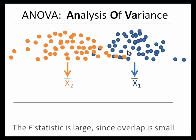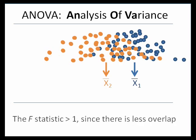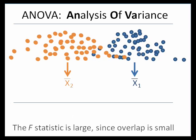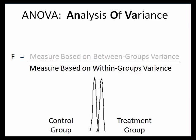The F-statistic will be large, indicating this difference is much larger than you would expect due to sampling error. So the more overlap, the smaller the F-statistic; the less overlap, the bigger the F-statistic.